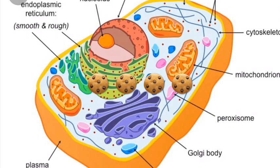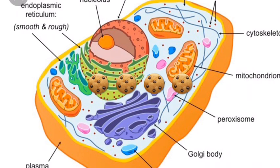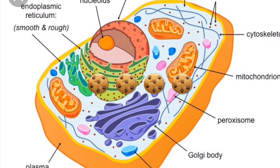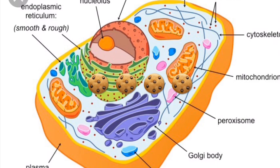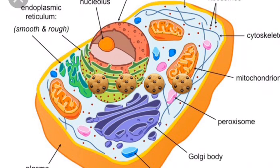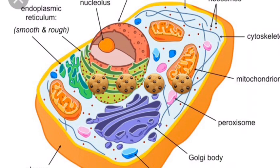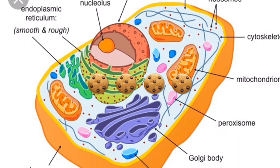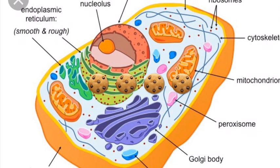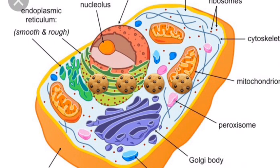The cytoplasm is everywhere outside of the nucleus, where all the organelles function. Chloroplasts are the solar panels of the cell. Mitochondria are the energy source of the cell — they convert chemical energy into usable compounds.